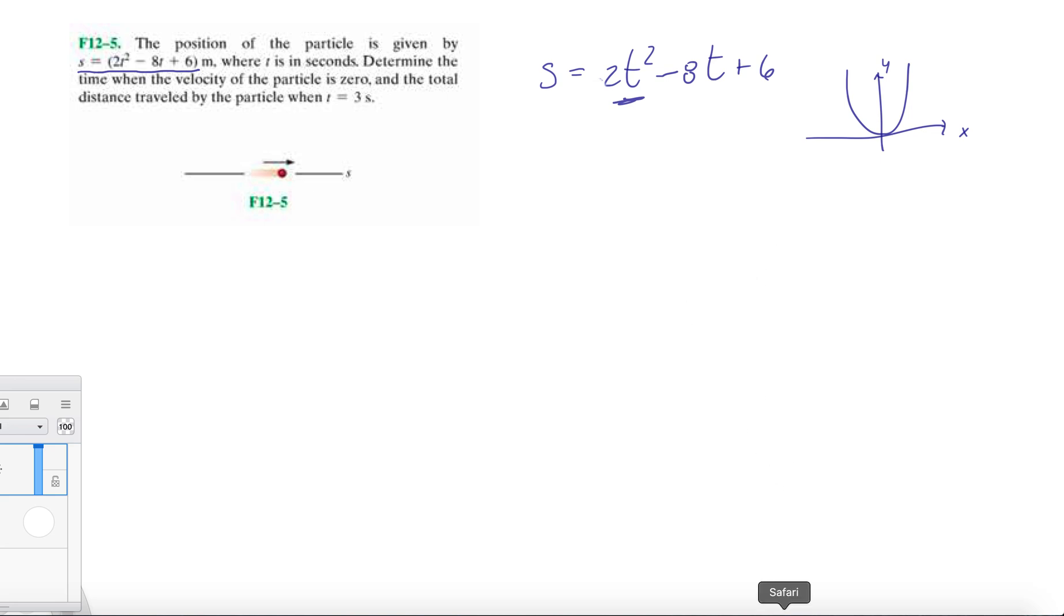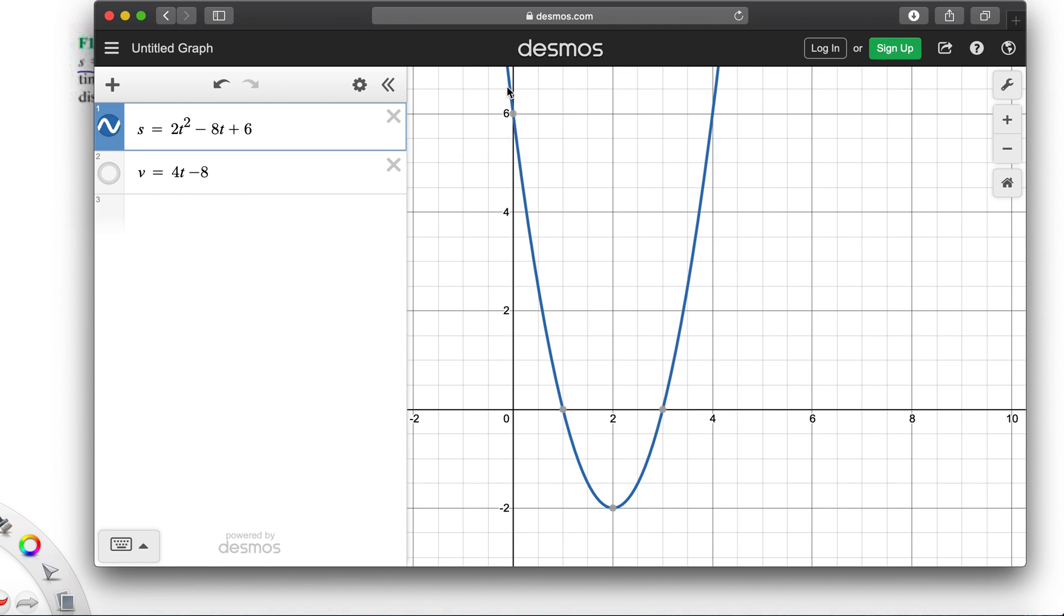If we plot this, if you have a graphing calculator and you're used to plotting things, you can see how the particle is moving. The X-axis is time and the Y-axis is position. And we know that as it moves with time, it begins to slow down and turn around.